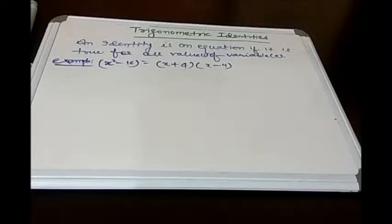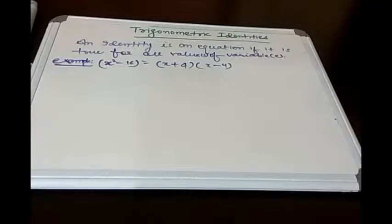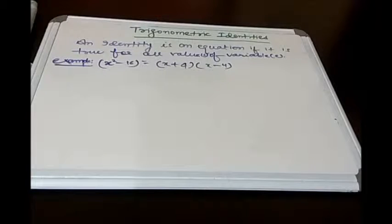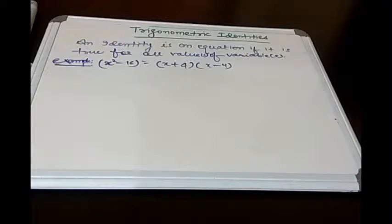In this chapter there is not much theory. What we will be doing is proving some basic trigonometric identities, and then we will move on to problems where we will use those basic trigonometric identities to solve more complex problems. Let's start with some basic trigonometric identities that are to be proven.